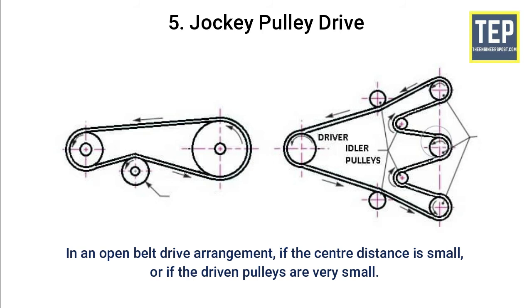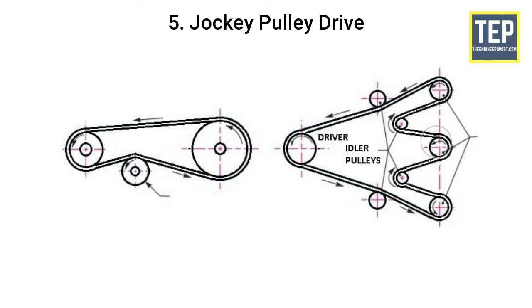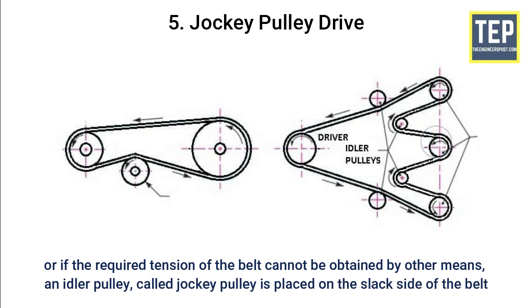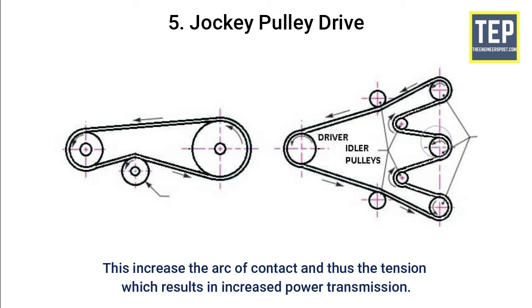In a jockey pulley drive, if the center distance is small or the driven pulleys are very small, the arc of contact of the belt with the driven pulley will be very small, which reduces tension in the belt. If the required tension cannot be obtained by other means, an idler pulley called a jockey pulley is placed on the slack side of the belt. This increases the arc of contact and the tension, resulting in increased power transmission.